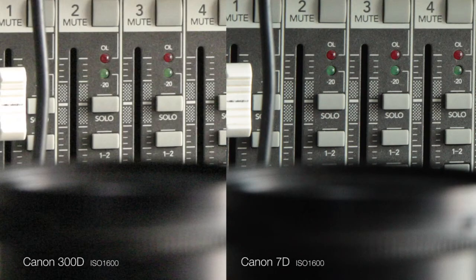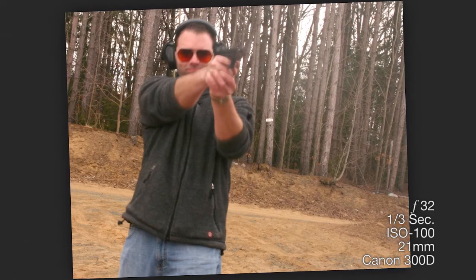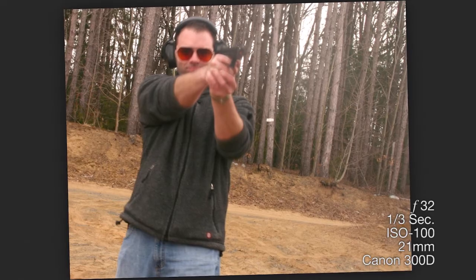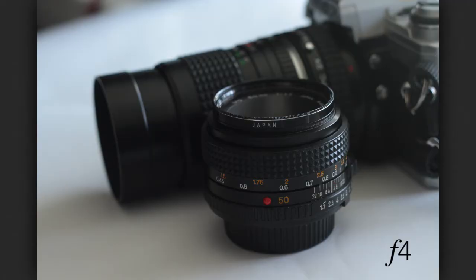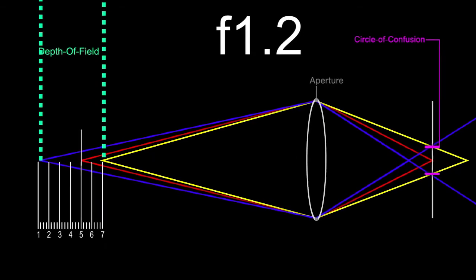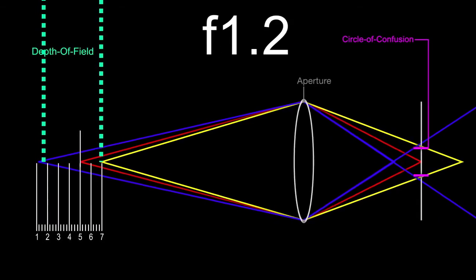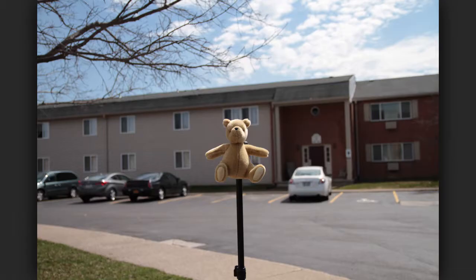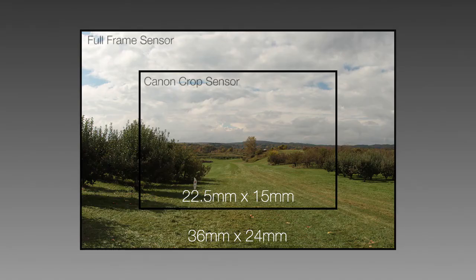We'll talk about ISO and noise, shutter speed and stopping motion, and aperture and depth of field. At this point, we will start our journey to discover the mysteries of depth of field by talking about how it works — how depth of field is related to subject distance, focal length, and sensor size.